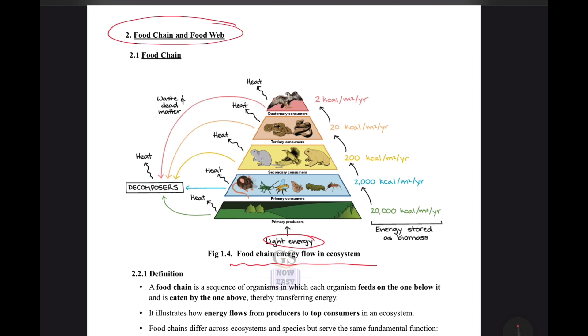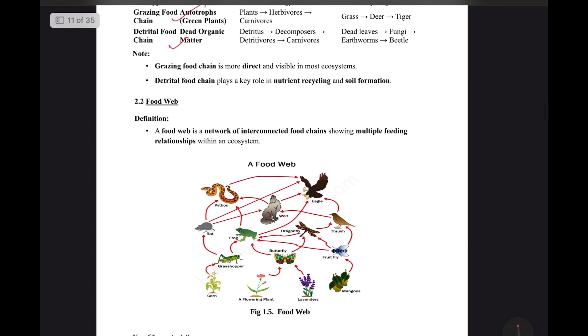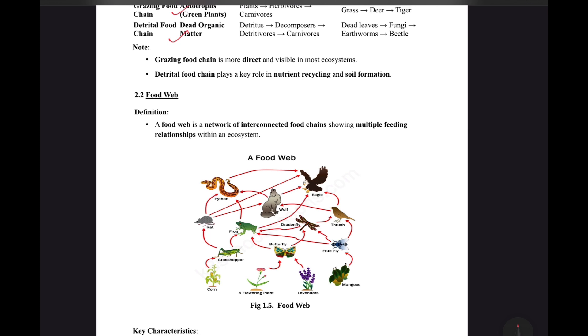The primary producer, sun, emits radiation. Primary producers, let's say, have 20,000 kilocalorie per meter square per year energy content. Then from primary producers to primary consumers, almost 90% decrease occurs, only 10% energy remains. This figure 1.5 also shows a simple food web like lavender or a flowering plant eaten by a butterfly, a butterfly then consumed by dragonfly, dragonfly consumed by thrush, thrush then consumed by eagle.